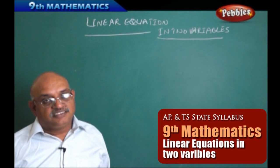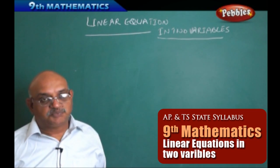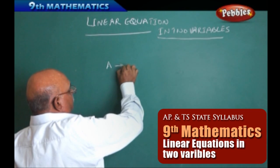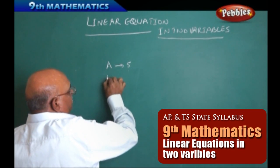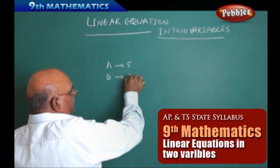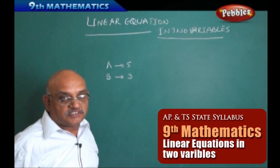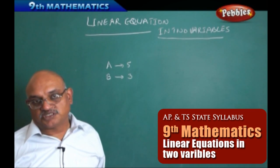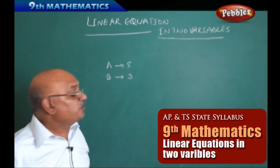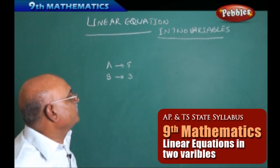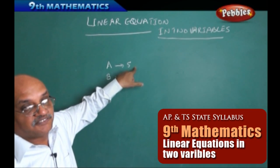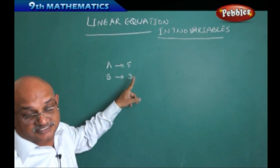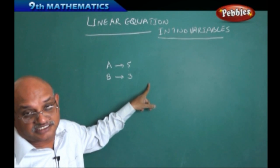For example, consider the ages of two children. Suppose person A has an age of five years and B has an age of three years. After five years, A is going to be ten years old and B is going to be eight years old.